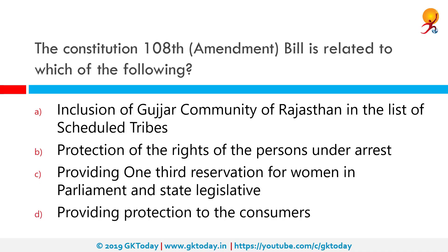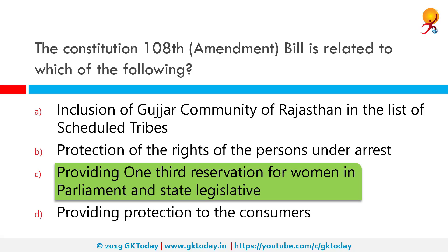The Constitution 108th Amendment Bill is related to which of the following? It is related to providing one-third reservation for women in parliament and state legislature. Commonly known as the Women's Reservation Bill, it seeks to reserve one-third of all seats for women in the Lok Sabha and state legislative assemblies. Introduced by the UPA-1 government in May 2008, it also provides that one-third of seats reserved for SC/ST shall be reserved for women of those groups.